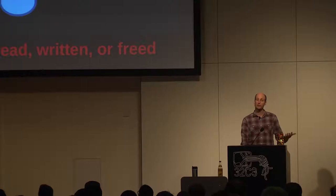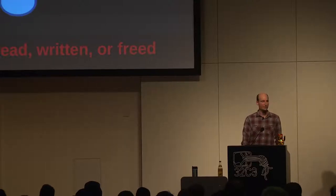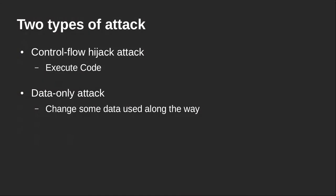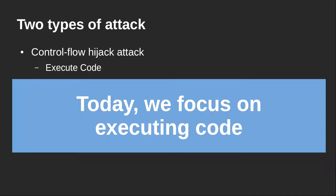There are two types of attacks that build on memory unsafety: control flow hijack attacks, where an attacker tries to execute code, inject new code, or execute different behavior not inherent to the original program; and data-only attacks, where the attacker changes data used along the way to change internal program state. Today we focus on executing code, because this is usually the prime motivation of an attacker who wants to execute code on a compute platform to get additional capabilities.